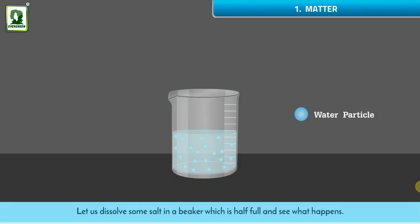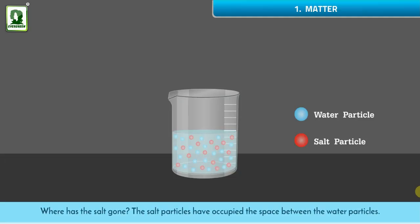Let us dissolve some salt in a beaker which is half full and see what happens. What happens? We find that there is no increase in the level of water in the beaker. Where has the salt gone? The salt particles have occupied the space between the water particles. Thus, matter is not continuous.